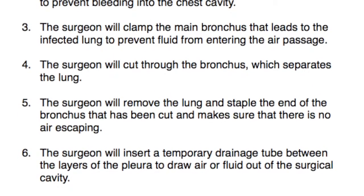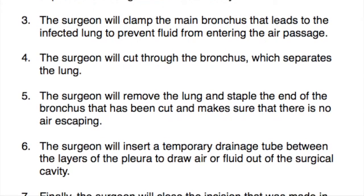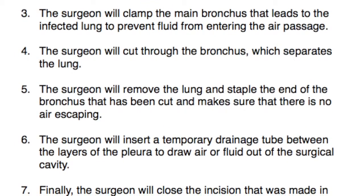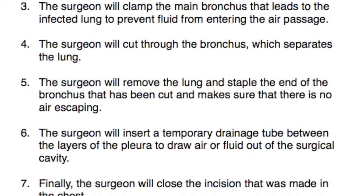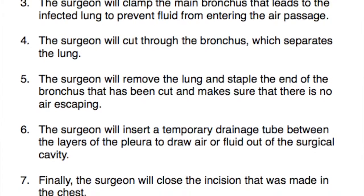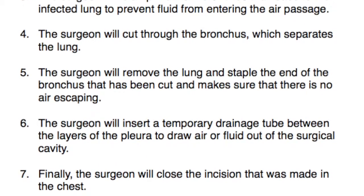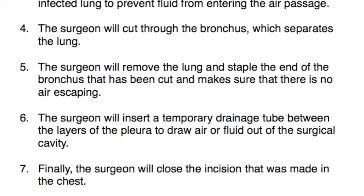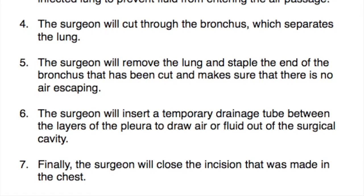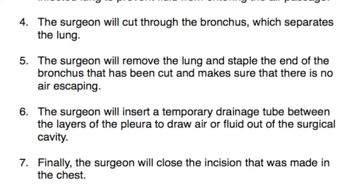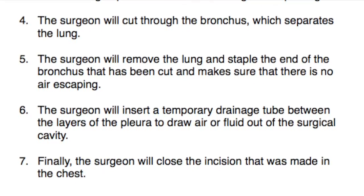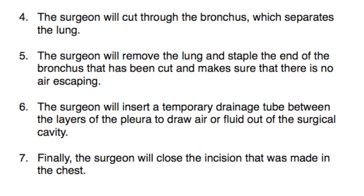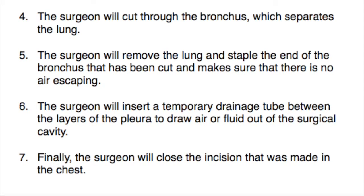Next, the surgeon will remove the lung and staple the end of the bronchus that has been cut, making sure that there is no air escaping. Finally, the operator will insert a temporary drainage tube between the layers of the pleura to draw air or any fluid out of the surgical cavity, and then close the incision in the chest.